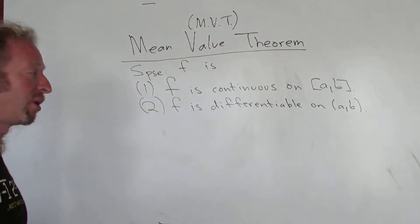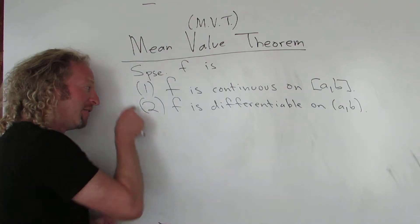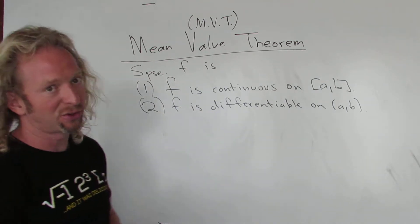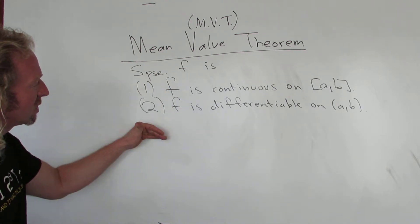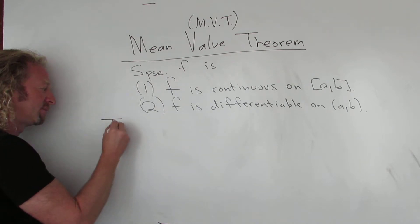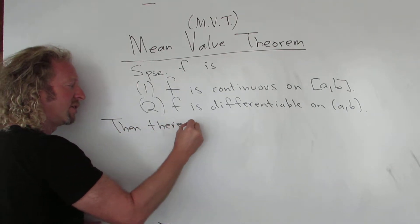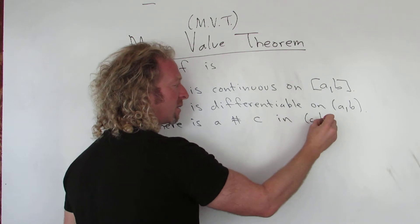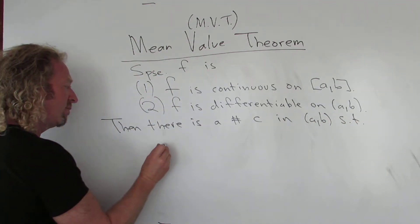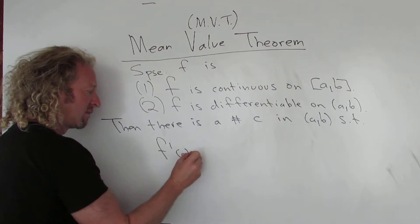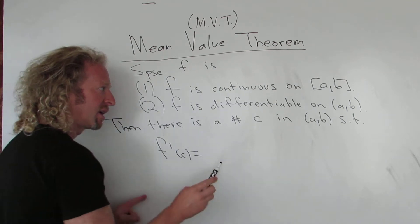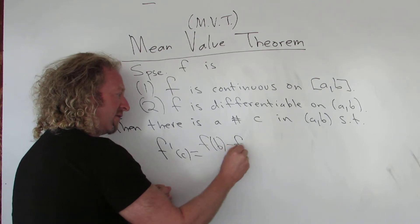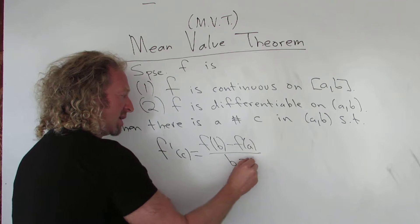So far this looks just like Rolle's theorem — identical to Rolle's. But there is no third condition. If it were Rolle's theorem, you would have that third condition where the Y values at the endpoints are equal. But it's not — it's the mean value theorem. So if these two conditions hold, then there is a number C in the open interval such that the value of the derivative at C is equal to the slope of the secant line connecting two points: F of B minus F of A over B minus A.